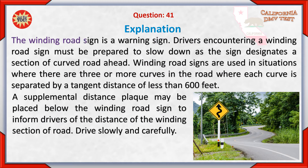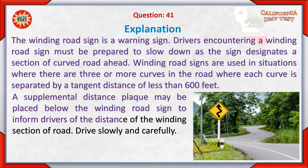The winding road sign is a warning sign. Drivers encountering a winding road sign must be prepared to slow down, as the sign designates a section of curved road ahead. Winding road signs are used where there are three or more curves, each separated by a tangent distance of less than 600 feet. A supplemental distance plaque may be placed below the sign. Drive slowly and carefully.